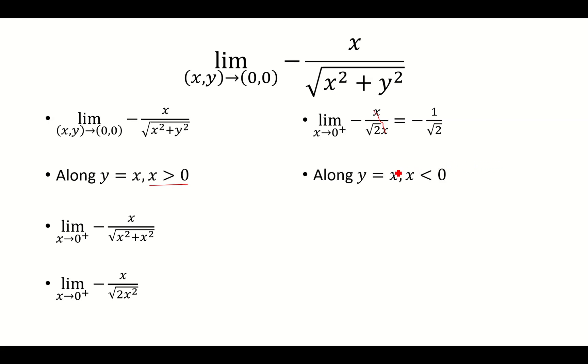Now we're going to look at the same path, y equals x, but we're going to look at it from the negative direction. So we have 0 approaching it from the left, and then negative x over the square root of x squared plus x squared. That's going to be 2x squared in the denominator.